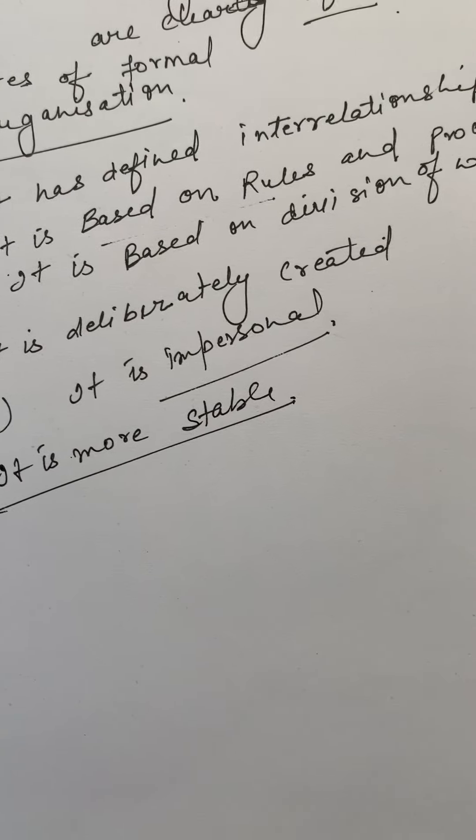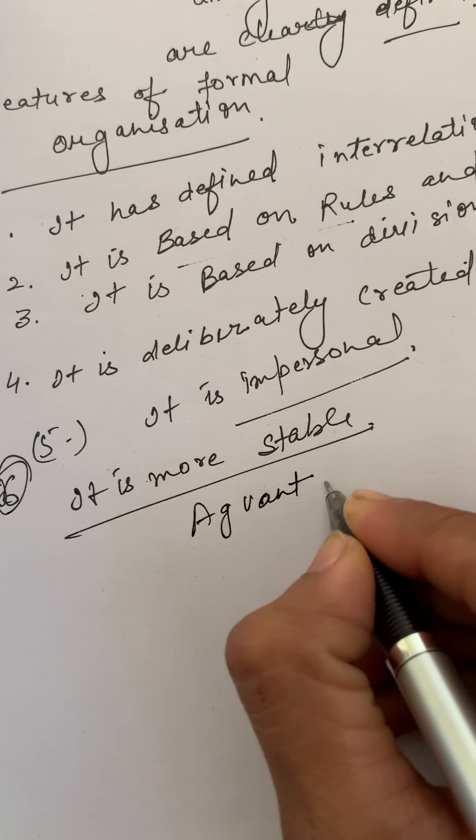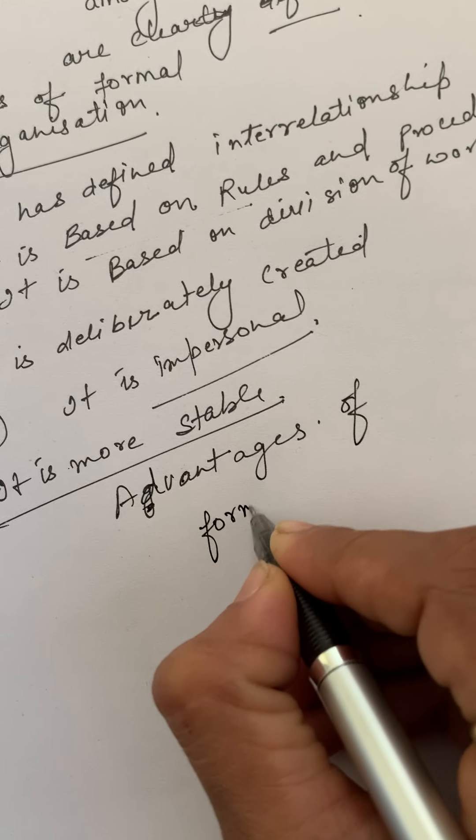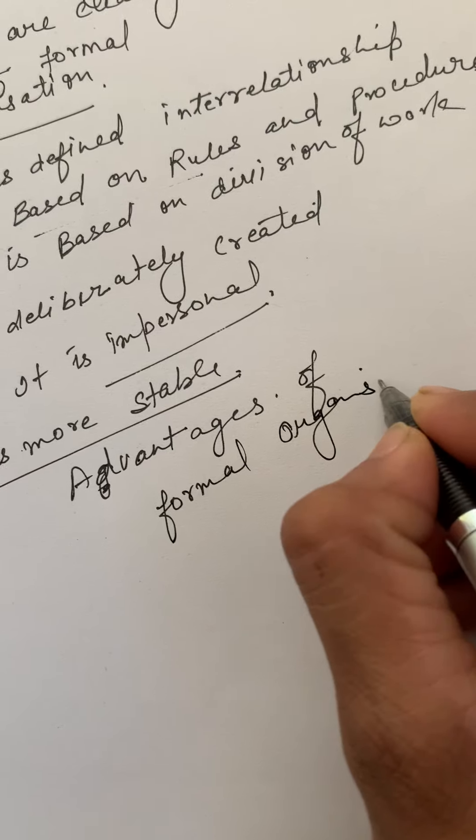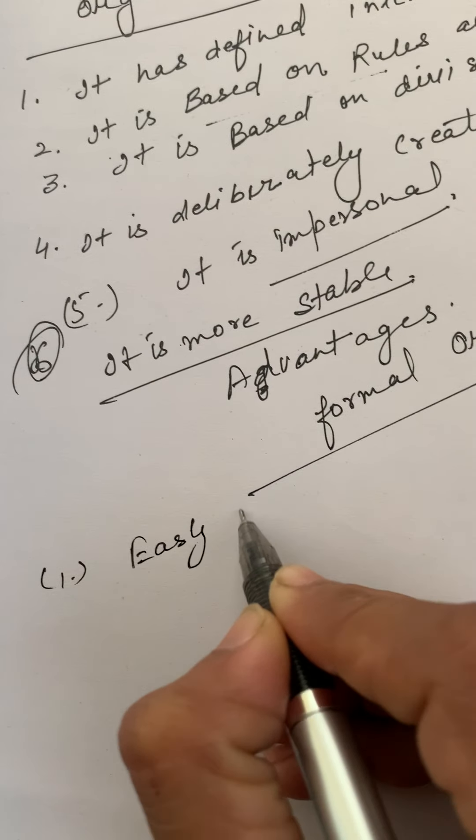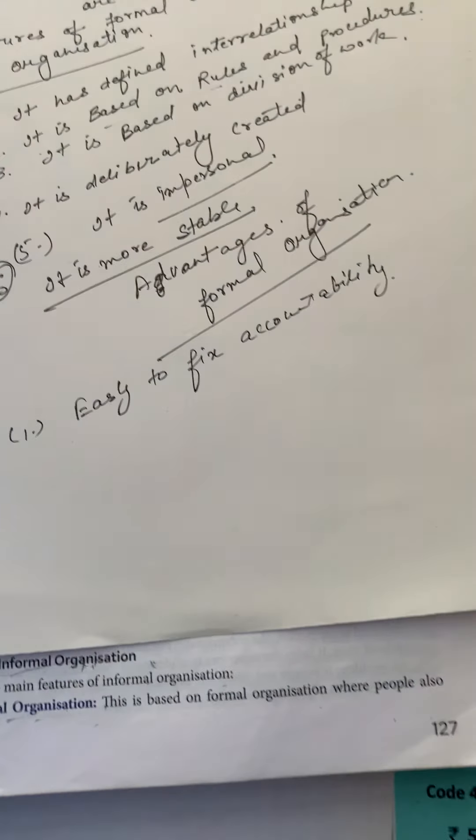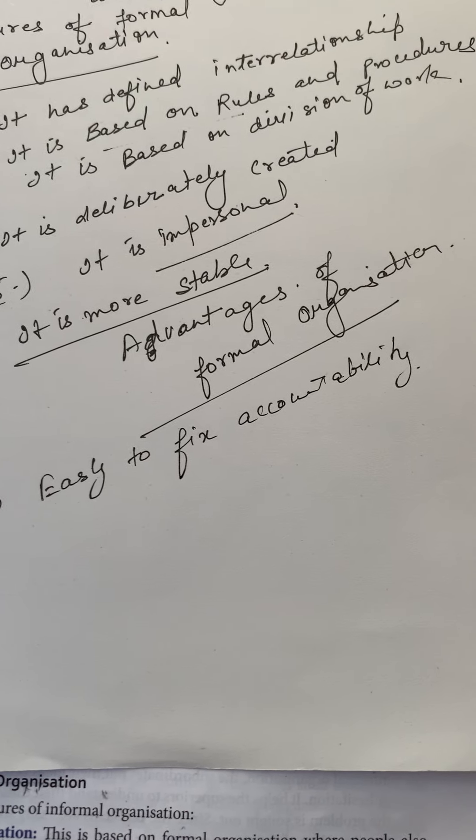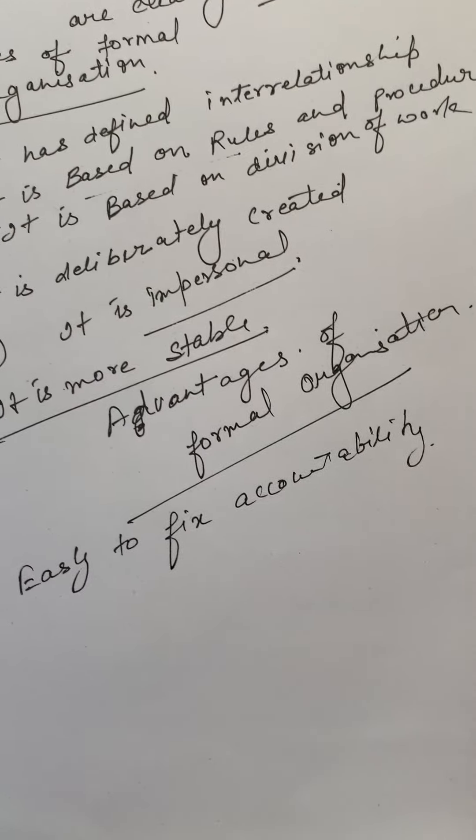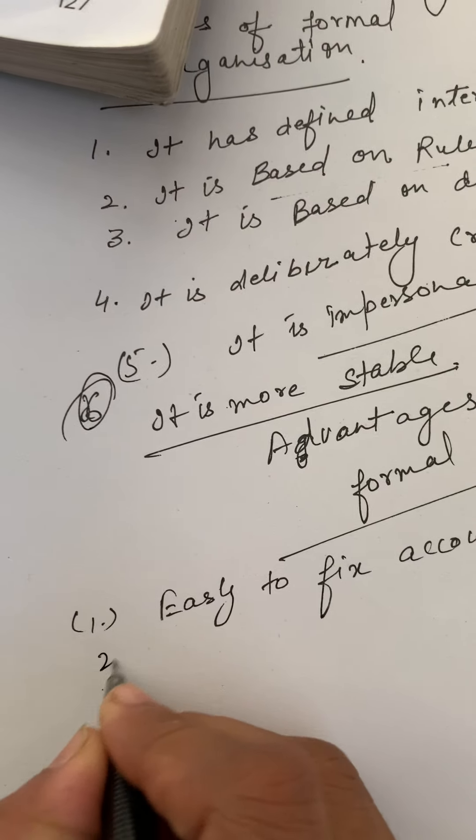Now its advantages. Advantages of formal organization: easy to fix accountability. It is easy to fix accountability.